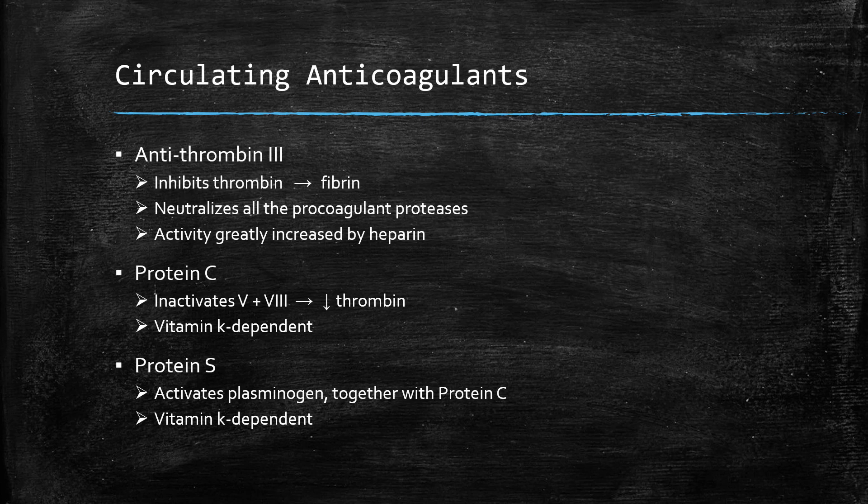There are three well-known circulating anticoagulants. Antithrombin-3 inhibits thrombin, leading to decreased production of fibrin, and also neutralizes all the procoagulant proteases. Heparin works by greatly increasing the effect of antithrombin-3. Protein C inactivates factors 5 and 8, leading to decreased thrombin production. Protein S, in conjunction with protein C, activates plasminogen. Plasminogen is ultimately converted to plasmin, and it's plasmin that helps to break up the fibrin clot. Both protein C and protein S are vitamin K dependent factors.